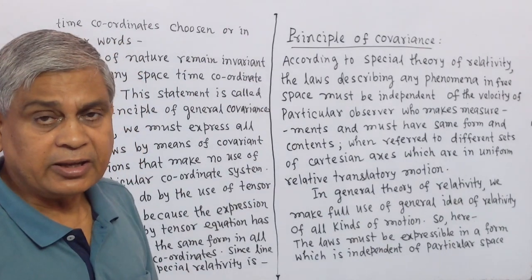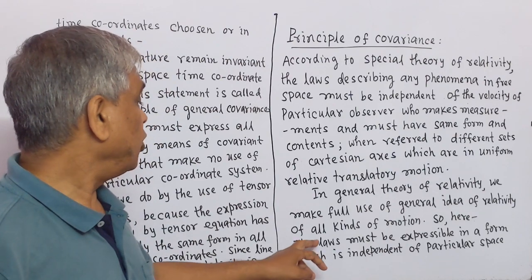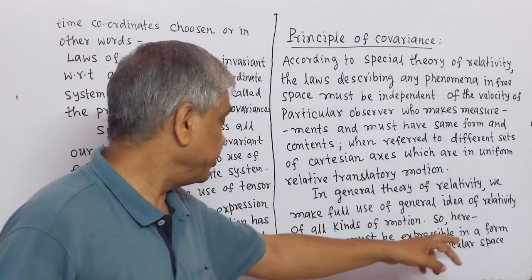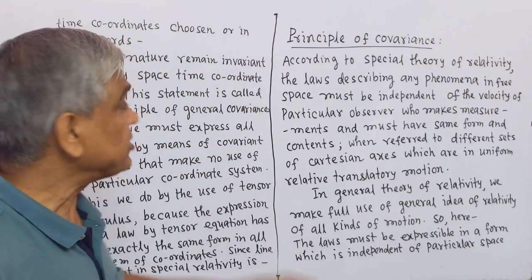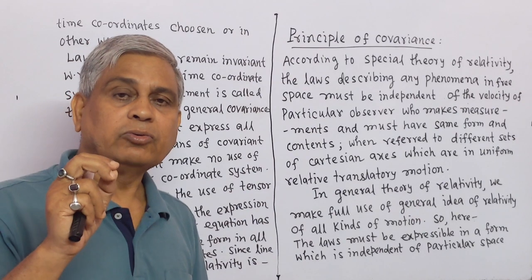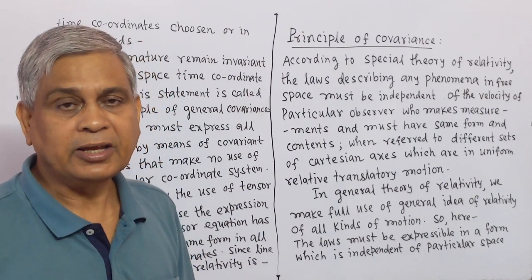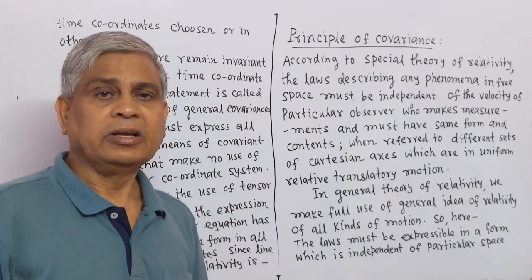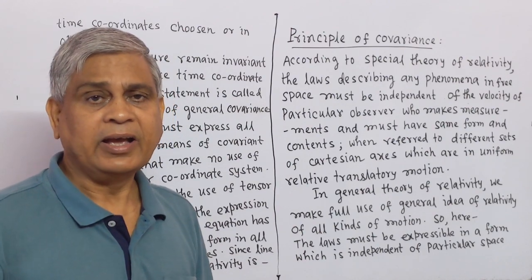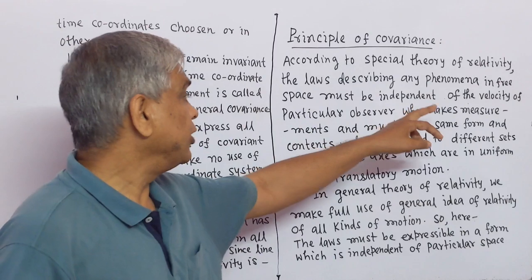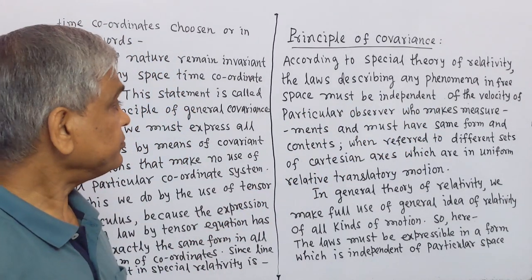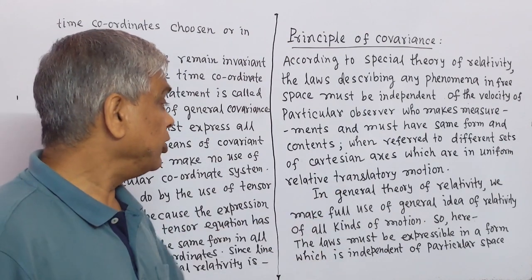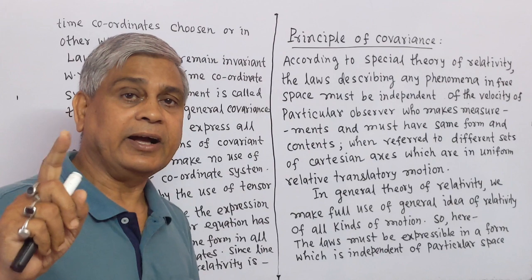In General Theory of Relativity, we make full use of the general idea of relativity of all kinds of motion. So here, the laws must be expressible in a form which is independent of the particular space-time coordinates chosen. We see that in Special Theory of Relativity, the coordinate system chosen is a rectangular Cartesian system of coordinates, and we consider the uniform velocity of the system. Any phenomena in free space must be independent of the velocity of the particular observer. However, in General Theory of Relativity, no such kind of ideas are taken.